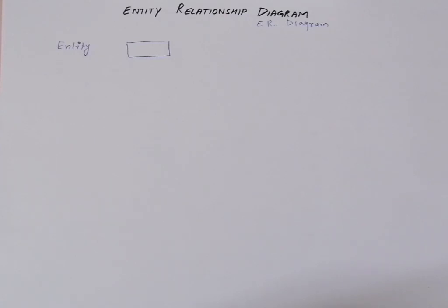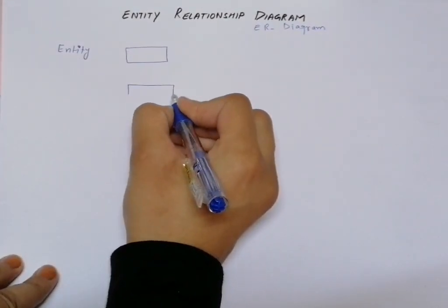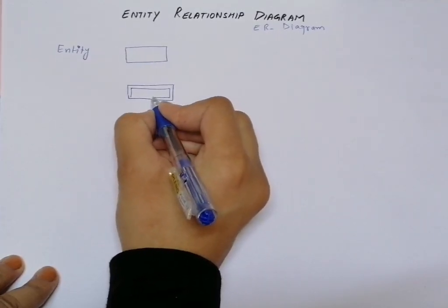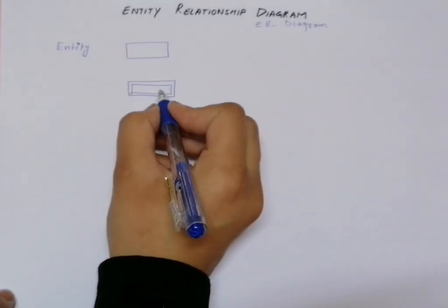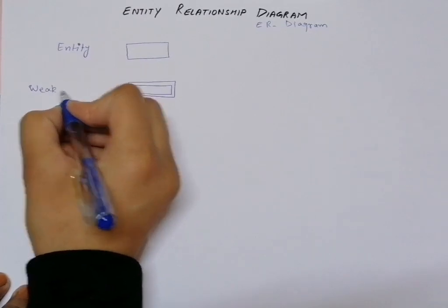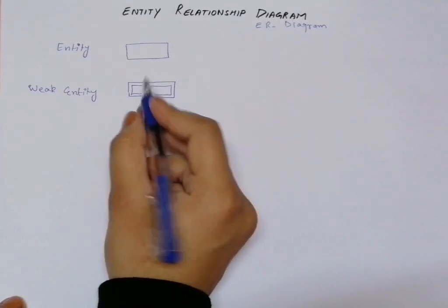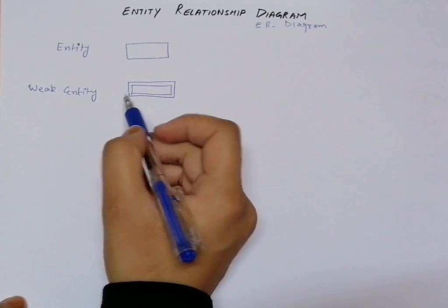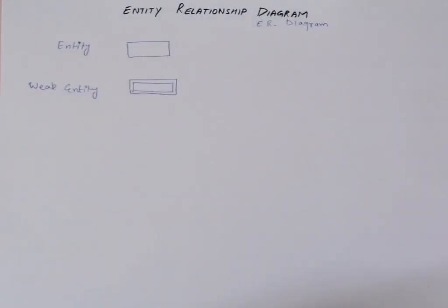Similarly, there are certain entities that are not strong enough to represent themselves uniquely without help from another entity. These are represented by a double rectangle box and are known as weak entities. So a strong entity is represented by a single box and a weak entity is represented by a double box.